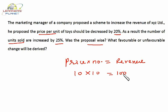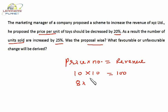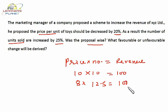He proposed the price per unit should be decreased by 20 percent, so the new price is 8. The number of units are increased by 25 percent, so the new number of units is 12.5. So it's 8 into 12.5, which is 100 — meaning there is no change in revenue.